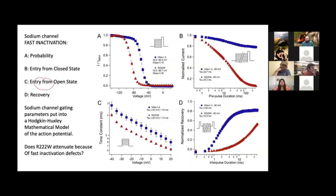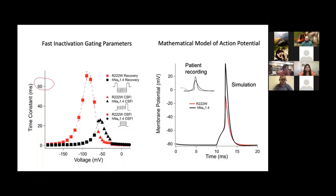What I thought would be of broader biological interest is using models. We put the results of those experiments — the parameters for inactivation — into a model of the skeletal muscle fiber membrane and compared a wild-type action potential in simulation versus the same model with the mutation parameters put in. The question was: does this look like what happens in a patient? On the left are all the kinetic parameters for wild type in black, or mutation R222W in red, across the voltages of inactivation.